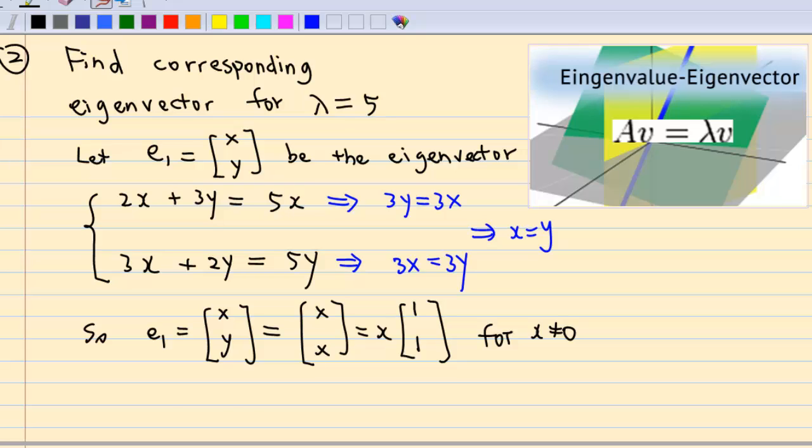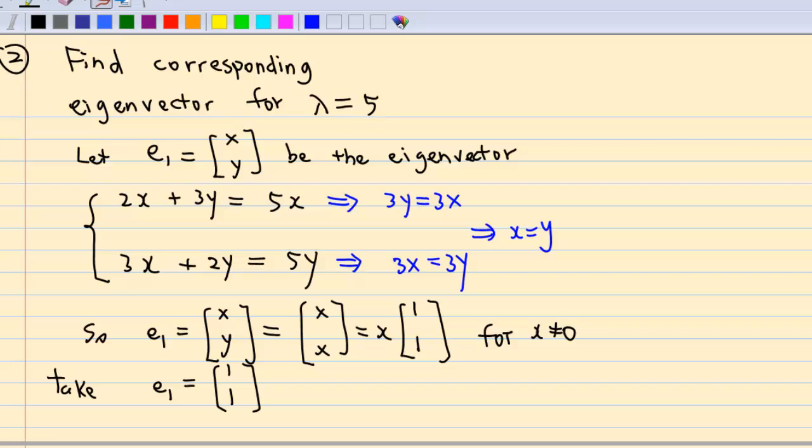Therefore, we take E1 to be a vector 1, 1. This is the eigenvector corresponding to lambda equal to 5.